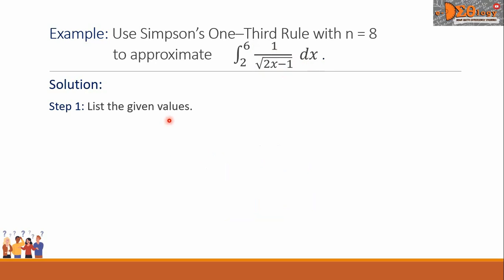First, let us list the given values. Our function y equals 1 over the square root of 2x minus 1. The a and b are the limits of integration with values 2 and 6 respectively. The n is equal to 8.